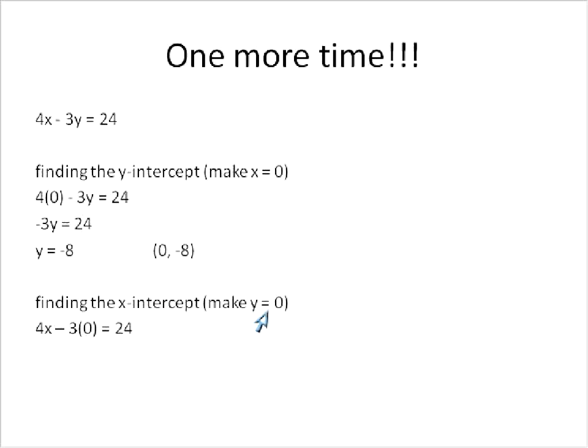For finding our x intercept, we make y equal 0. Plug that 0 into the equation. 3 times 0 is 0. 4x minus 0 is the same as saying 4x. So now we solve for 4x. We'll divide both sides of the equation by 4. 24 divided by 4 is 6. 4x divided by 4 will just give us x. So using the property of equality again, we found that x is equal to 6 when y is equal to 0. So that's going to be a point on this line. Specifically, it's going to be the x intercept point.